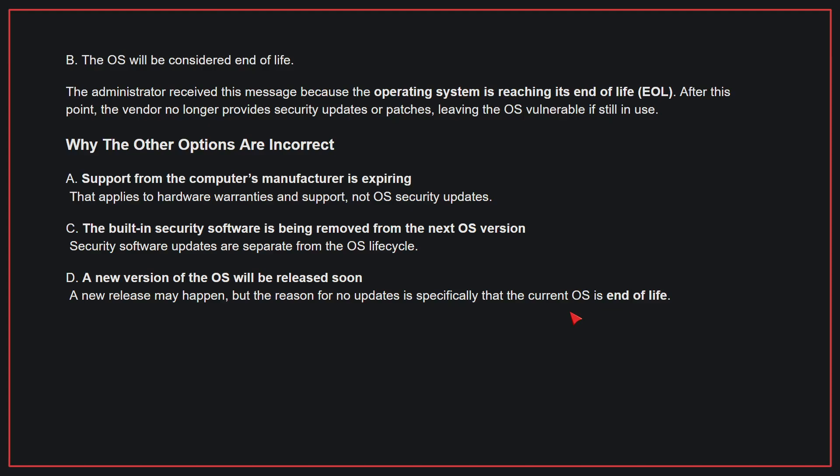Why the other options are incorrect: A, support from the computer's manufacturer is expiring — that applies to hardware warranties and support, not OS security updates. C, the built-in security software is being removed from the next OS version — security software updates are separate from the OS lifecycle. D, a new version of the OS will be released soon — a new release may happen, but the reason for no updates is specifically that the current OS is end of life. Therefore, the correct answer is B.